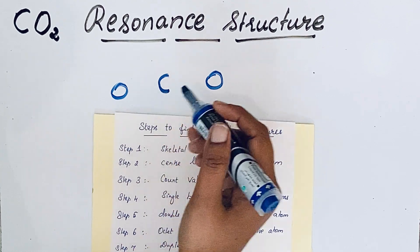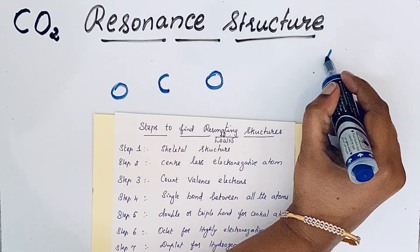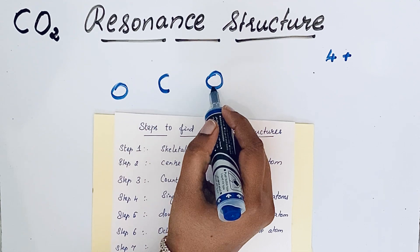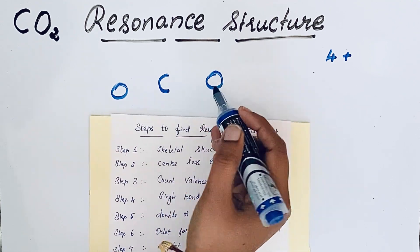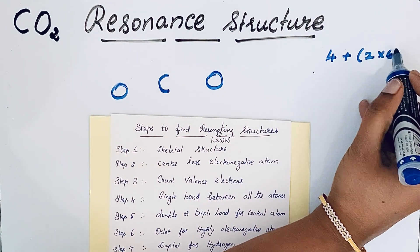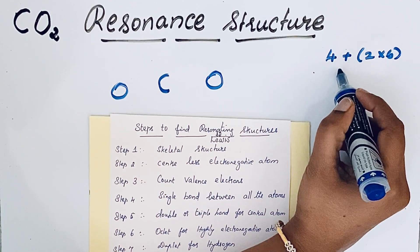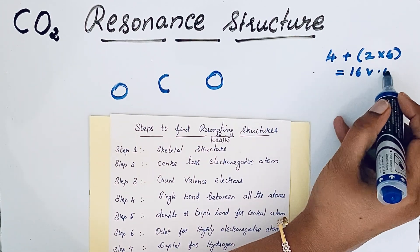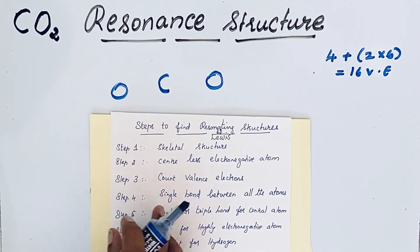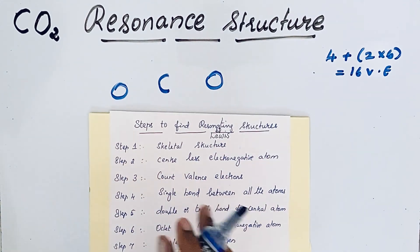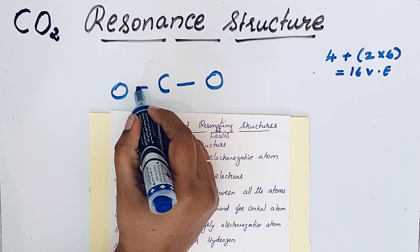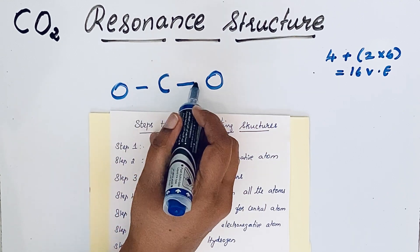Step three: count the valence electrons. Carbon has 4 valence electrons, and each oxygen atom has 6 valence electrons. With two oxygen atoms, that's 2 × 6 = 12, plus 4, giving us 16 total valence electrons in this compound. Step four: draw a single bond between all atoms — a single bond means two electrons are involved.